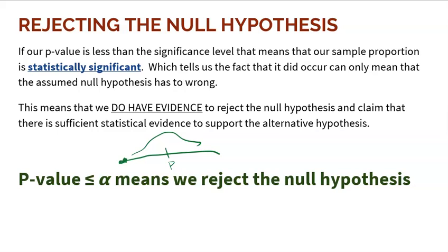If the p-value is less than or equal to your alpha — your significance level, typically 0.01 or 0.05 — this means we're going to reject the null hypothesis. That's the proper language. We're basically saying the null is wrong and we're going to go with the alternative.